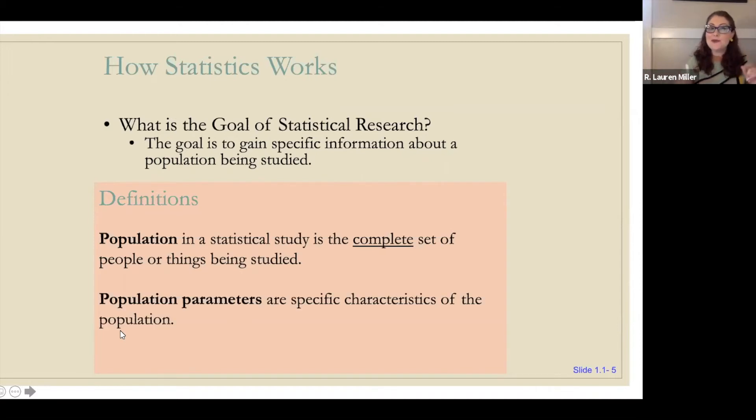Population parameters are specific characteristics of a population. If we looked at the population of people, a population parameter about people is that there's 48.6% women. When we have a population, we're going to find a parameter about it.